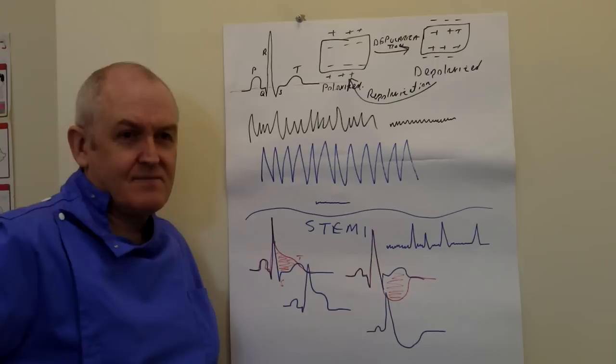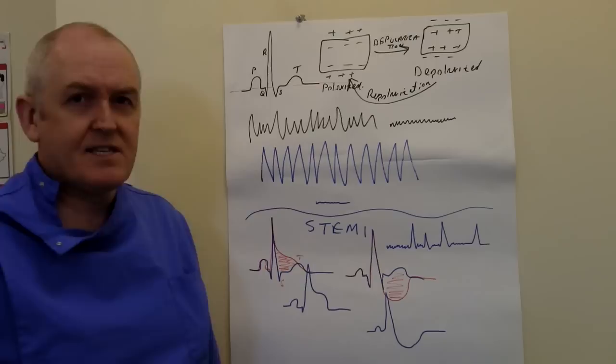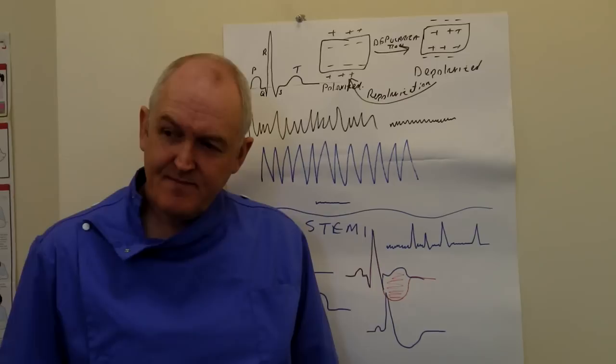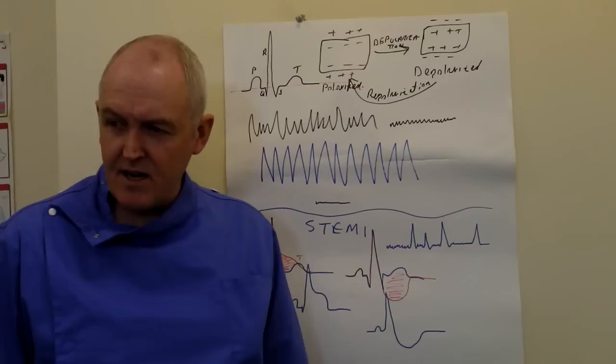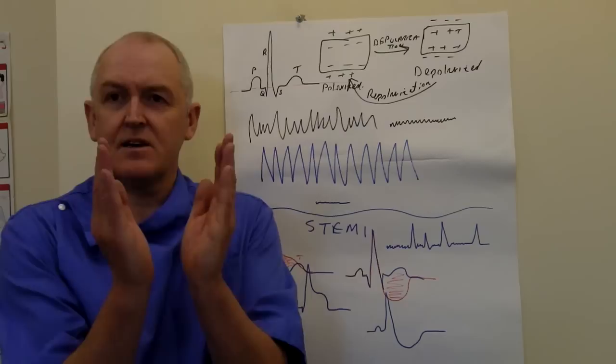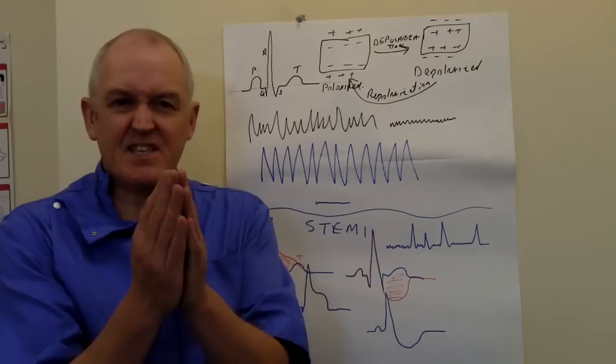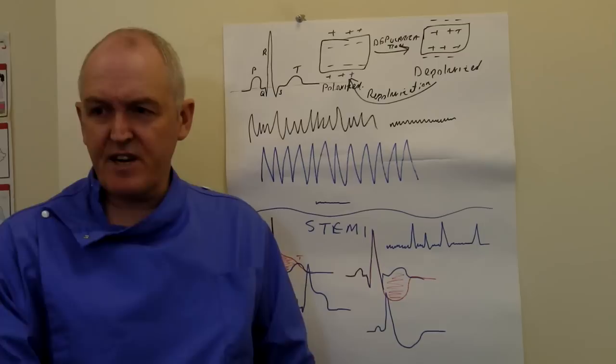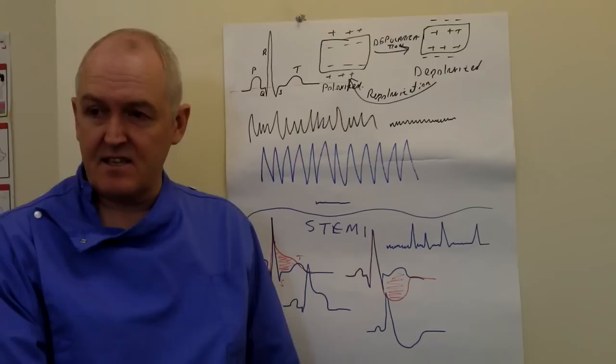With pulseless electrical activity there is no pulse but there is a PQRST. Why? Because you are getting depolarisation of the myocardium as normal, but because the myocardium is diseased, hypoxic, or hypoperfused, it's just sitting there doing nothing — the muscle is unable to respond to the electrical activity. That's quite a dangerous arrest rhythm. If someone's in pulseless electrical activity, you've got to treat the underlying cause and treat it basically as an asystole.